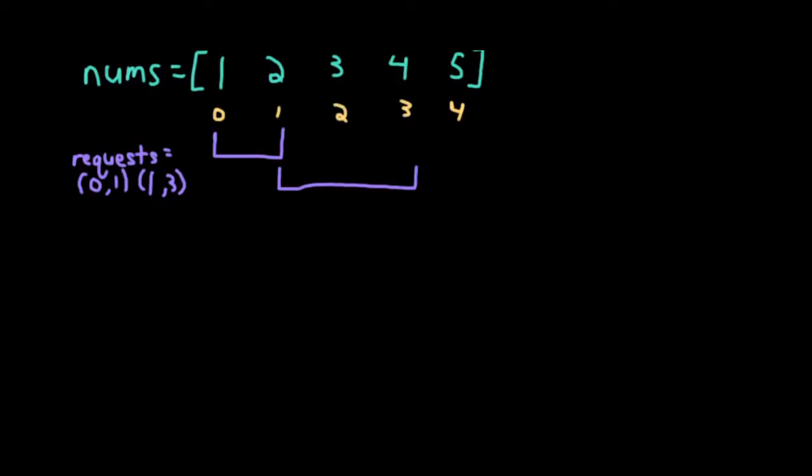I've gone ahead and written down the first example. Our nums array is 1, 2, 3, 4, and 5 as the values, and I've gone ahead and written down the indices below. The requests we were given were 0, 1, and 1, 3, and I visualized these a little bit in purple. It means from indices 0 to 1, we want to include those, and also from 1 to 3, we want to include those as well.